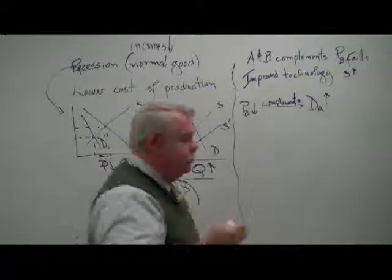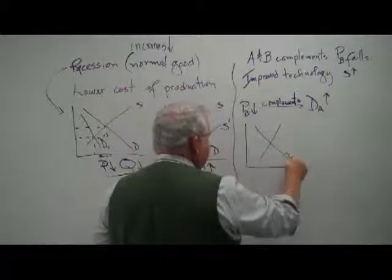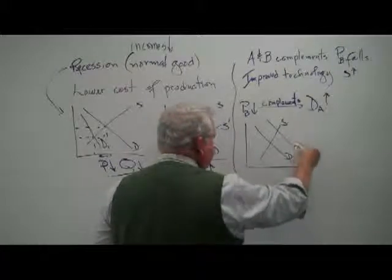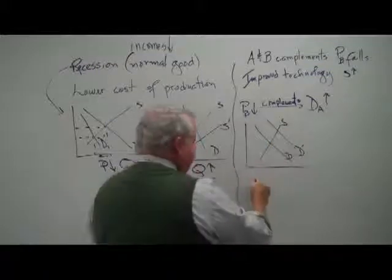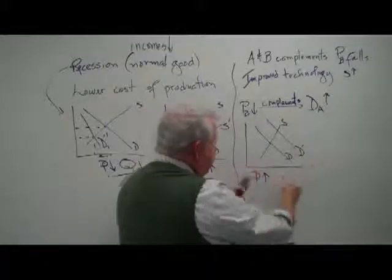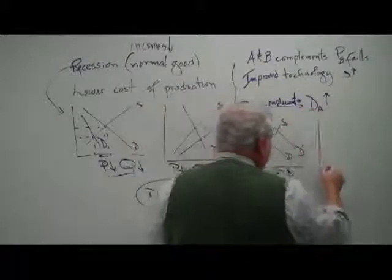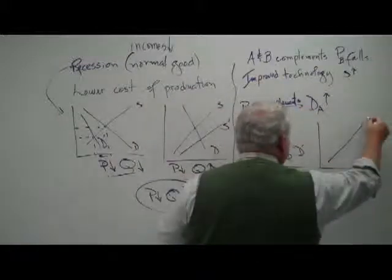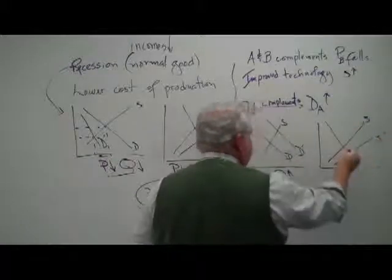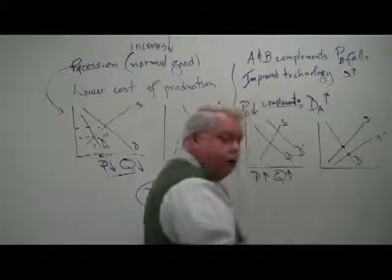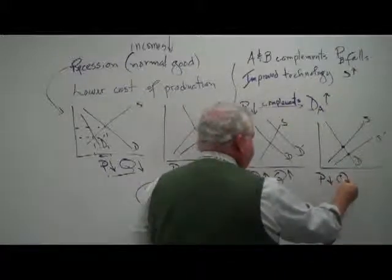Use two graphs. Graph one, increase in demand, D to D prime. Price goes up, quantity increases. Over here also, we have an increase in supply. Supply shifts to the right. We go from one point to another point. The price falls, the quantity increases.